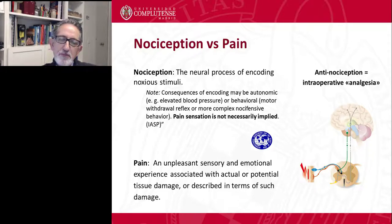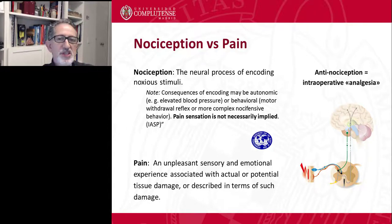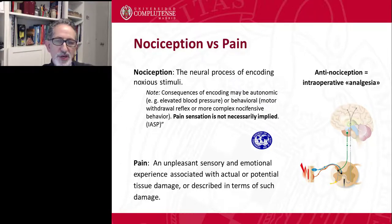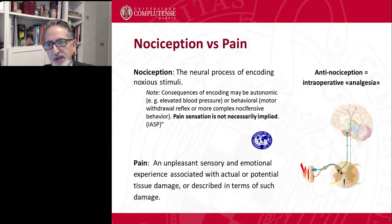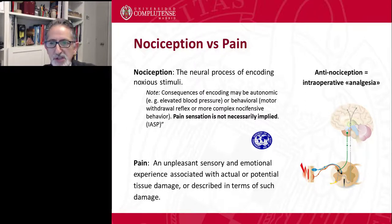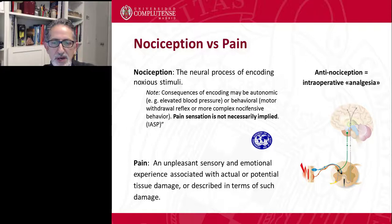We should consider nociception against pain. Nociception is the neural process of encoding nociceptive stimuli, and pain sensation is not necessarily implied — for example, during anesthesia. Pain, on the other side, requires consciousness. Nociception can be produced during anesthesia, that is, during unconsciousness. So we should probably define antinociception as the way we use analgesics during anesthesia, and many people will consider this as providing intraoperative analgesia.